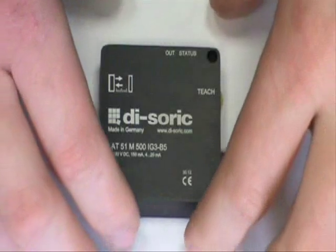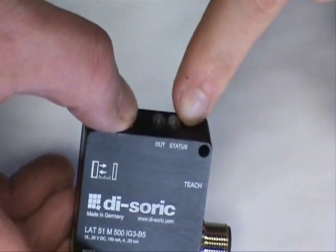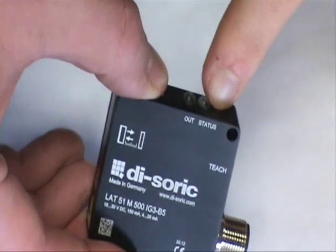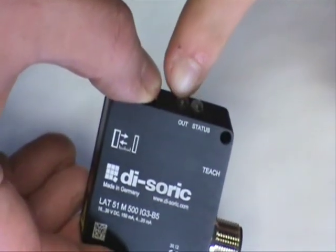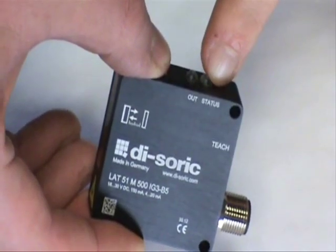Taking a closer examination of the LAT51 sensor, we can see that on the top of the sensor is included two status LEDs, one for its current output state and the other for the sensor's current overall status.